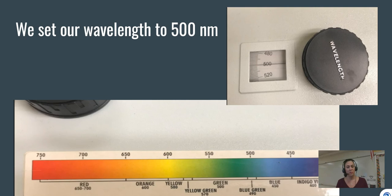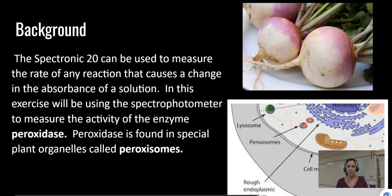In our investigation, we always set the wavelength to 500 nanometers — a bluish-green wavelength — because that's the wavelength our solute will absorb best. Now that we know how a spectrophotometer works, we're ready to talk about the biology. The spec, sometimes called a Spec 20, can be used to measure rates of reaction if those reactions cause a color change — and our reaction will cause a color change.